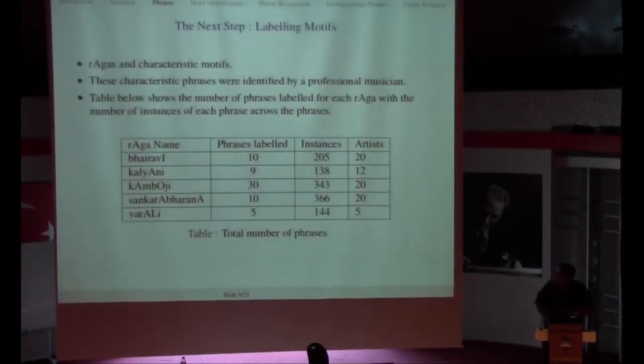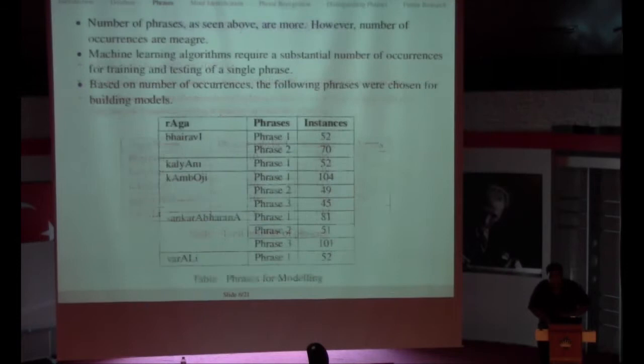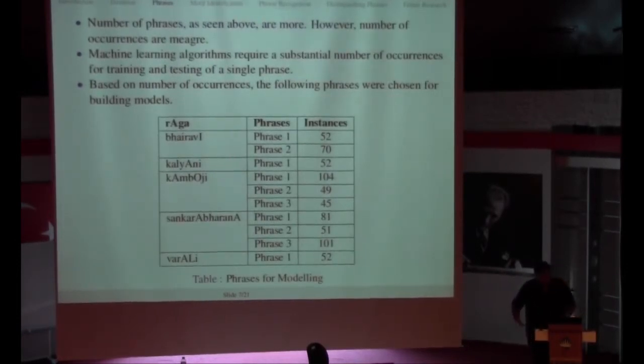So what we did is we started marking the characteristic phrases of these Ragas. Each Raga has many characteristic phrases. So I started marking for the Raga Kambhoji and went on marking for the other Ragas. Initially I marked all the phrases that I thought were important for Kambhoji, Bhairavi and Shankarabharanam, Varali and Kalyani. As you can see I marked 10 phrases, 9, 30 for each of these Ragas. I got many instances for a lot of phrases, but the number of occurrences for some phrases were really meager.